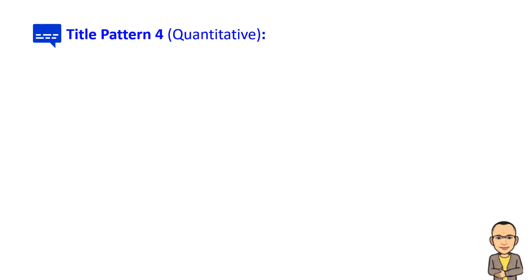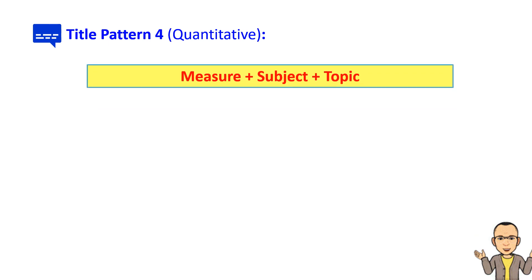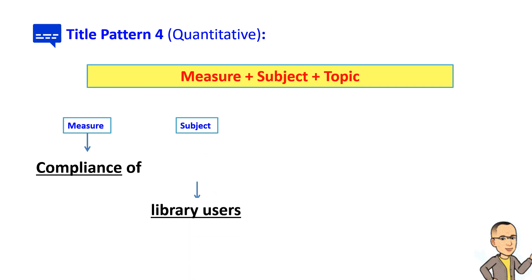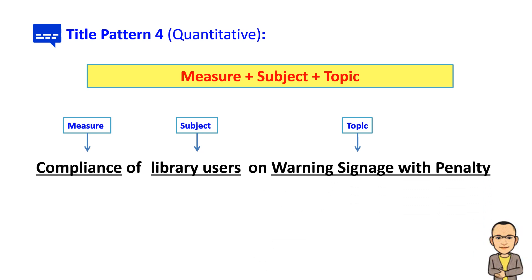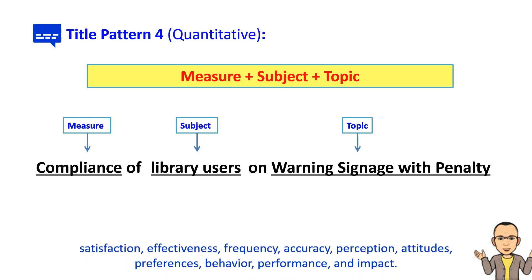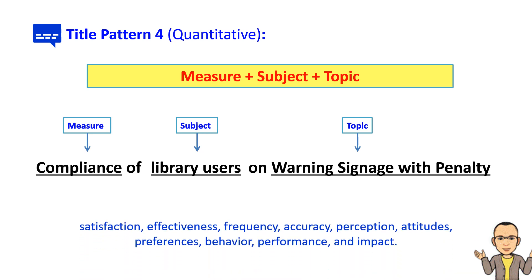The fourth pattern is well suited for quantitative studies employing measures. This pattern involves combining: measure + subject + topic. To illustrate, the measure is 'compliance,' the subjects are 'library users,' and the topic is 'warning signage with penalty.' Other common measures used in research include satisfaction, effectiveness, frequency, accuracy, perception, attitudes, preferences, behavior, performance, and impact.